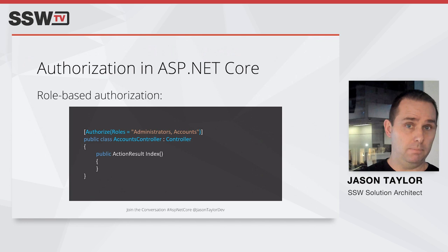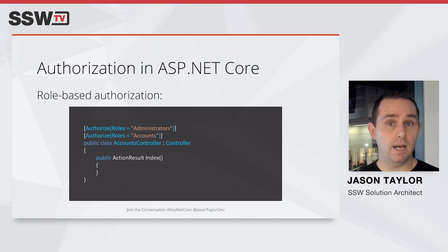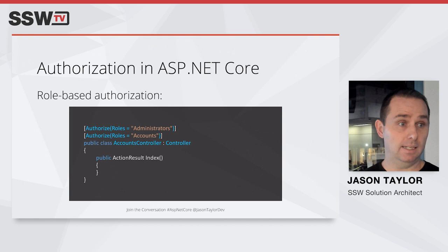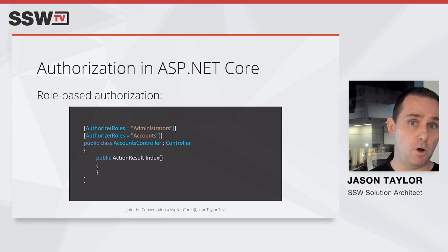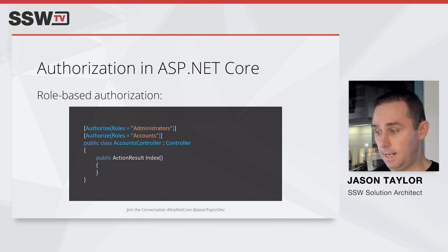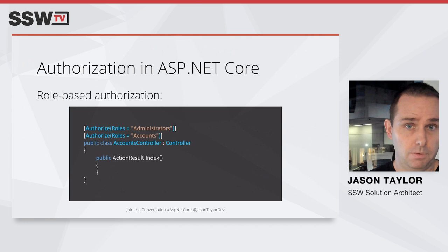When you have two Authorize attributes each specifying one role, the user must be a member of both the Administrators role and the Accounts role to gain access. You can combine and compose these attributes to specify the requirements you want to convey. For instance, if you had Administrators and Power Users in the first attribute and Accounts in the second, the user must be a member of Administrators or Power Users and also a member of Accounts.